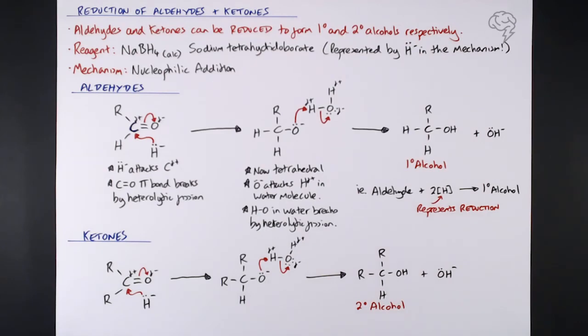Overall, in terms of using that H in square brackets, it's just the same as above. This time it's a ketone plus two [H] in square brackets, and that gives us our secondary alcohol.